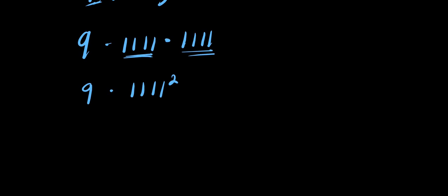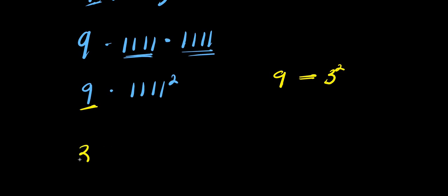The next step is to also express this nine, which is a perfect square, in terms of three. So nine equals three power two, giving us three power two times 1111 power two.